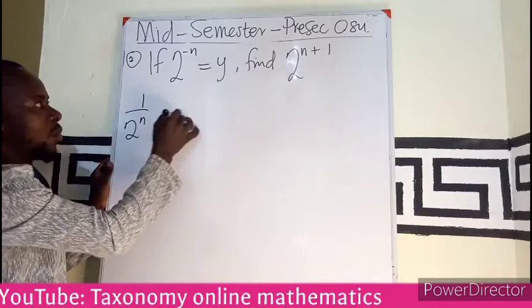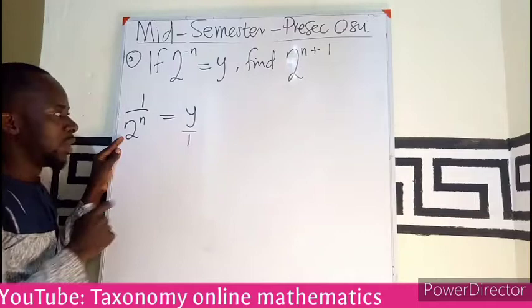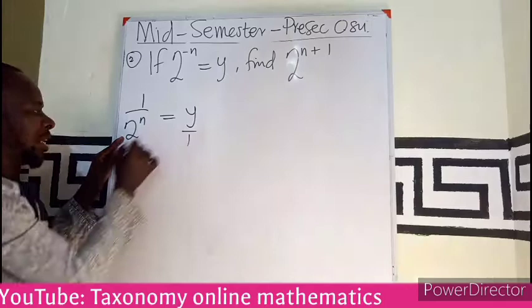So in this case, since I am seeing 2 exponent n, I want to make this stand alone so that I can substitute into that value. Then I will cross multiply. We're having 1 times this to give us 1. We're having 2 to the n, then multiply by y equals 1.